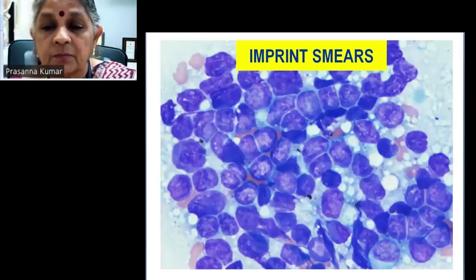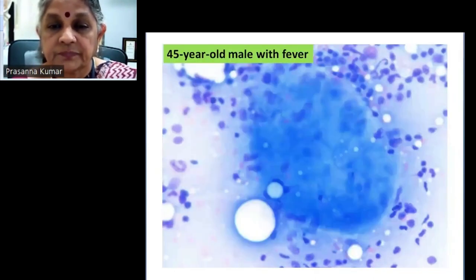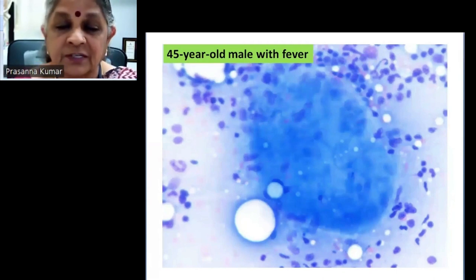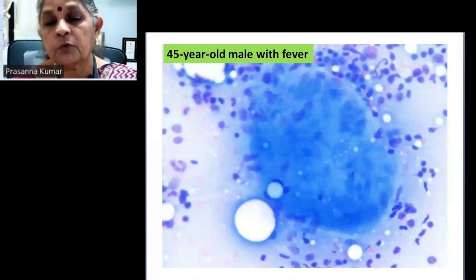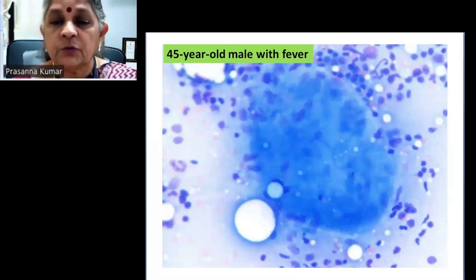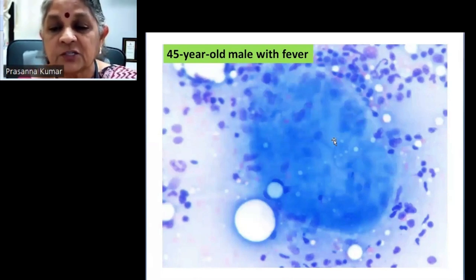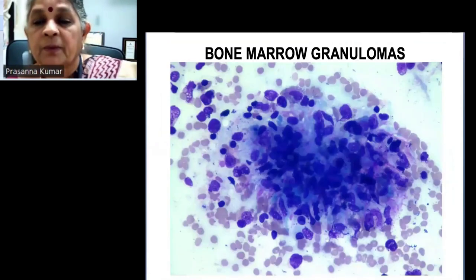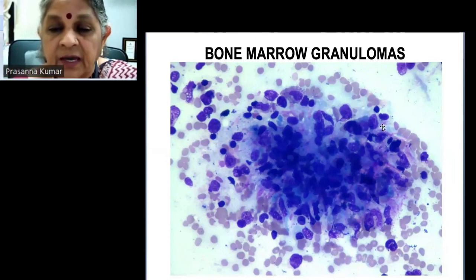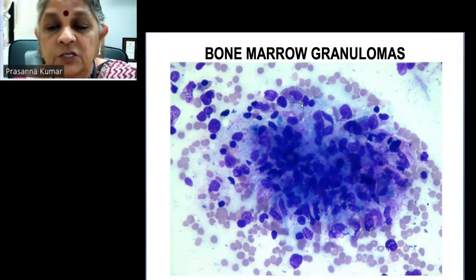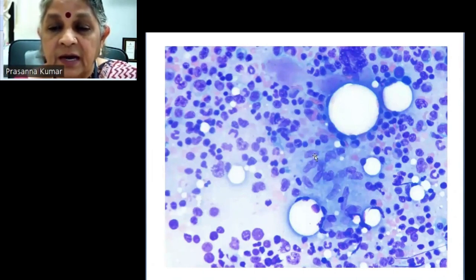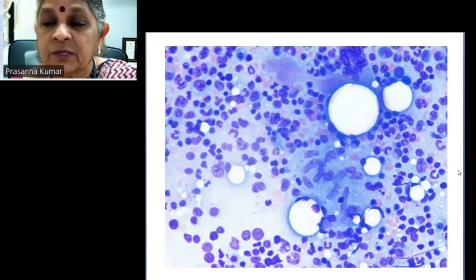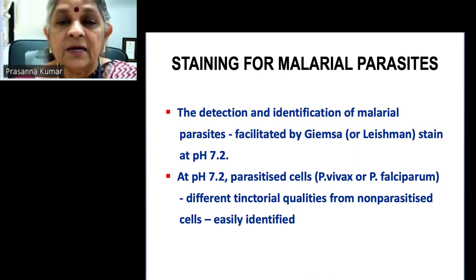For trephine biopsy imprint smears — since trephine processing takes time for decalcification — these stains give excellent morphology understanding. A 45-year-old male with fever: with manual staining from years ago you could vaguely make out an aggregation of query epithelioid cells. With the same type of case using automated staining recently, you can very clearly see the collection and the epithelioid nature of the comma-shaped cells — absolutely certain identification.